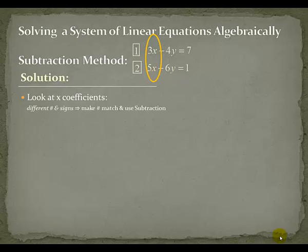What we're going to want to do is notice that we want to make these numbers match. So instead of 3x and 5x, we want them both to be the same number times x. And in this particular case, I'm going to have them be the same sign, so they'll both be positive.